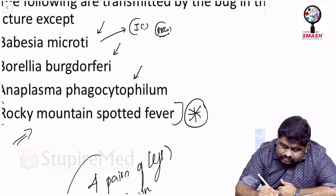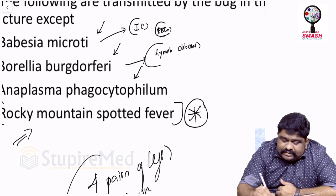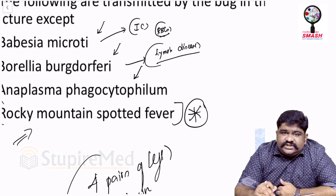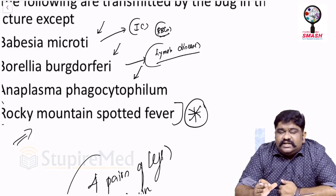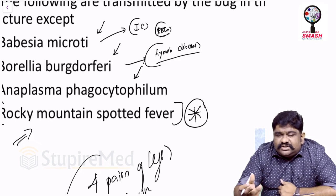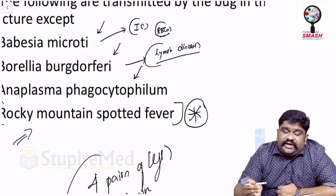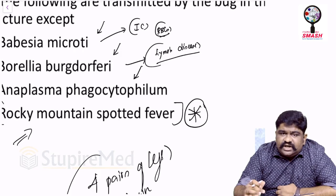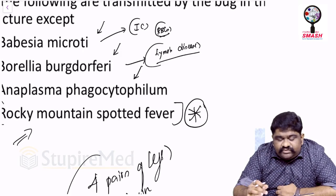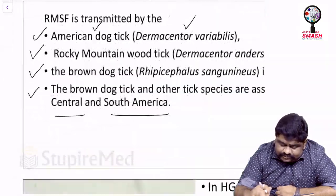Borrelia burgdorferi is known for causing Lyme disease, which has three stages. The first stage is the skin lesion — erythema chronicum migrans. The second stage involves spread to the heart and CNS: in the heart it can cause atrioventricular block and arrhythmias; in the CNS it can cause meningoencephalitis. The third stage is a destructive arthropathy.